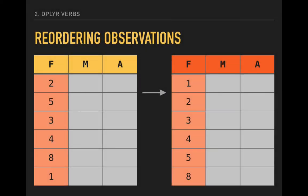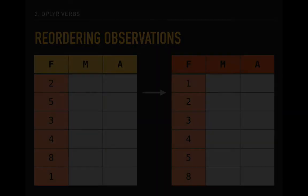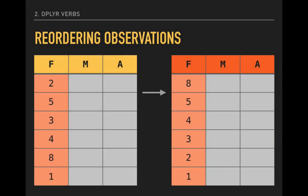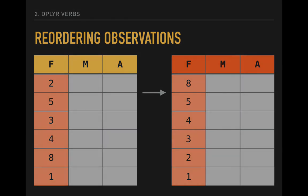A second task we may wish to accomplish is reordering our observations. In our original data model on the left, the values of the variable f are not in any particular order. If we want to order them, as in the example on the right, from low to high, we can do that easily. We can also reorder our observations from high to low, as in this example. Regardless of the order, it will impact every variable for every observation, since the entire order of the data frame will change.